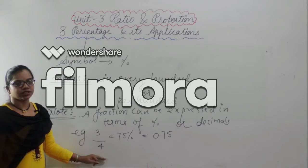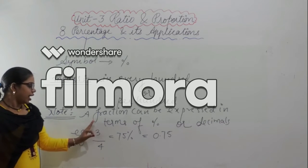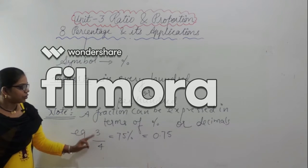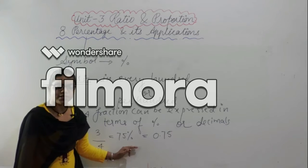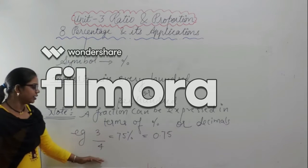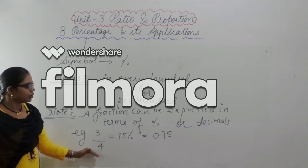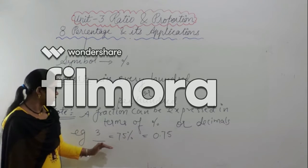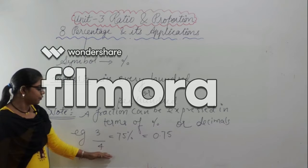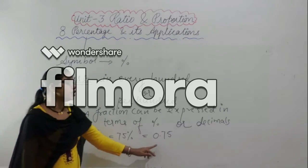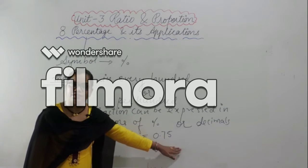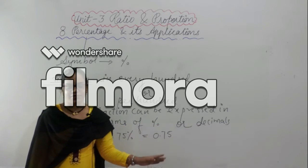For example, 3/4 — if I have to take out the percent, it will be 75%, and when I take out the decimal form of 3/4, it will be 0.75.